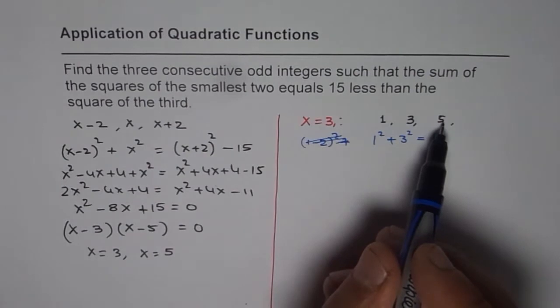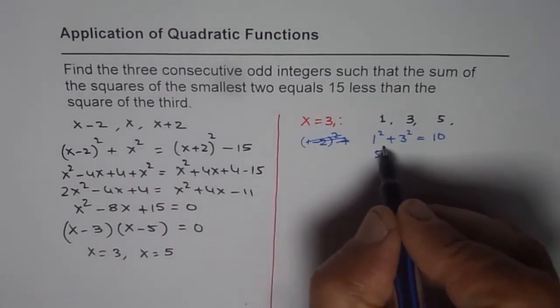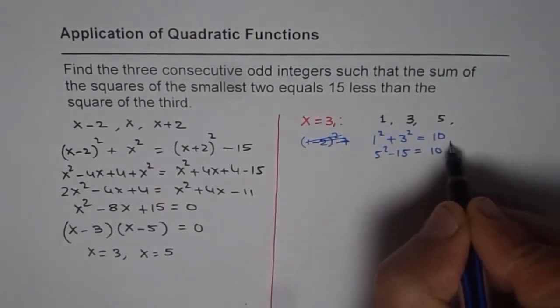On the other hand, the third square, which is 5² - 15, is how much? That is 25 - 15, which is also 10. So it works.